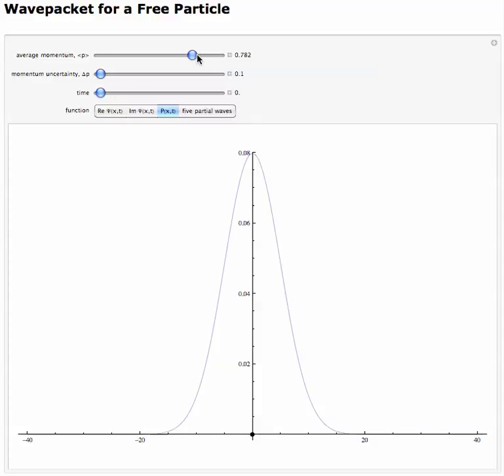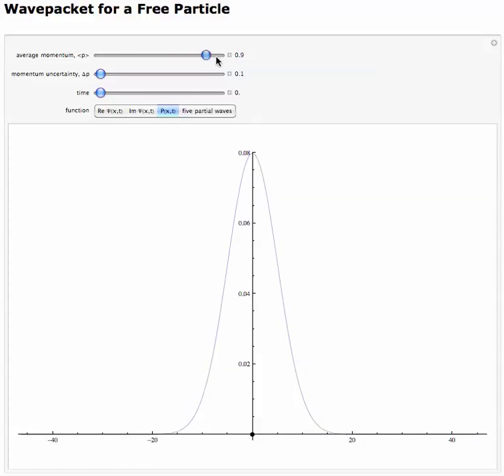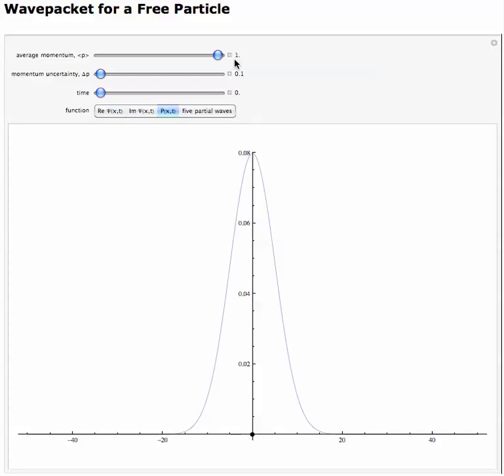If we increase the average momentum, that means that because the uncertainty principle, we decrease the uncertainty in the position. And that's why it gets narrow. The relationship between the uncertainty in the momentum, or the average momentum, and the uncertainty in the position is obvious there. So now we have a narrower wave packet.